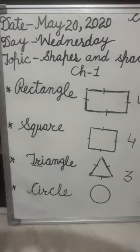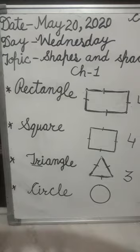Example of square shape: Ludo खेलते हैं आप? Ludo जिससे हम खेलते हैं, जो device होता है Ludo के लिए — that is dice. Dice जो होता है, वो हमारा square shape में होता है. Bread slice — जो bread slice होती है, that is also in square shape.